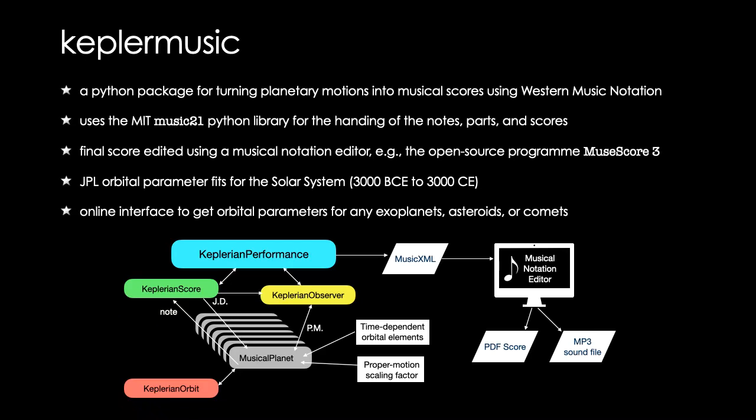I've written a package called Kepler music, which does this for you. It takes the orbital motions of planets and turns that into tones, arranges them according to the program's design, and turns it all into a music XML file that can be read by any musical notation editor software to finalize the creation of the final scores.